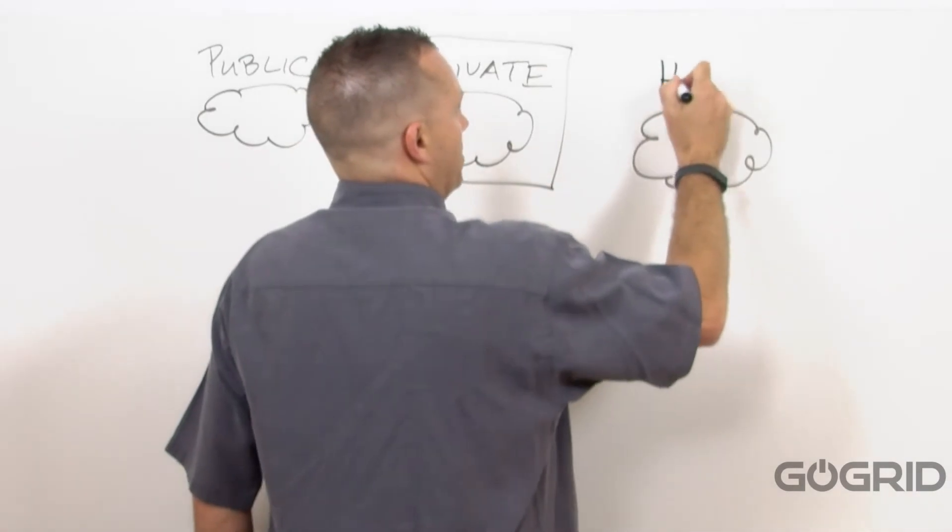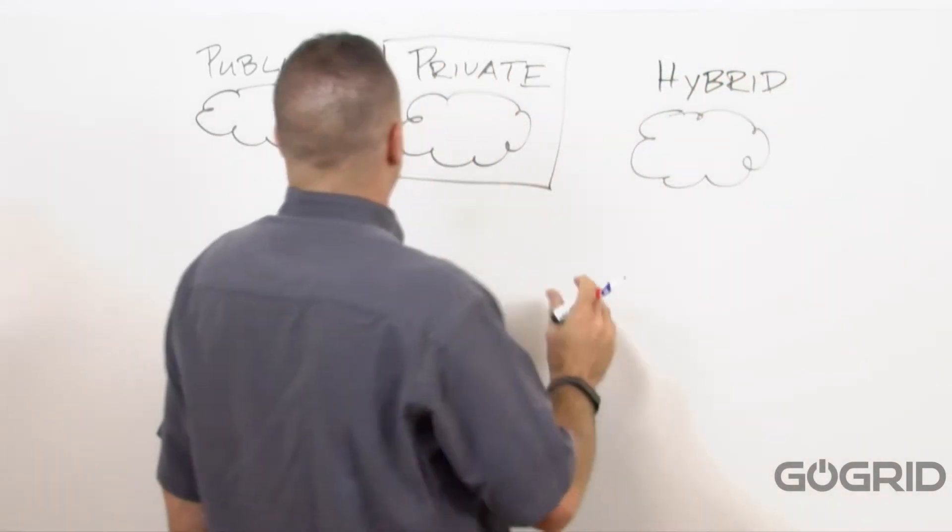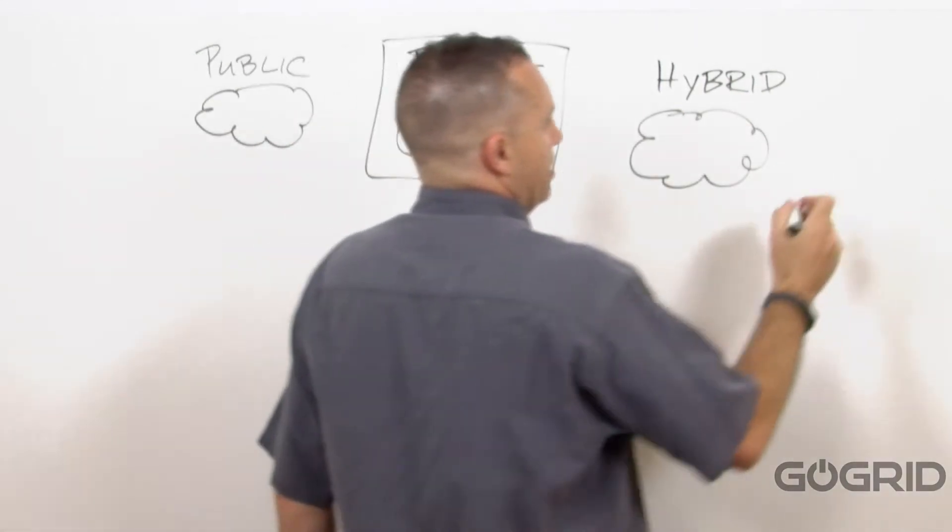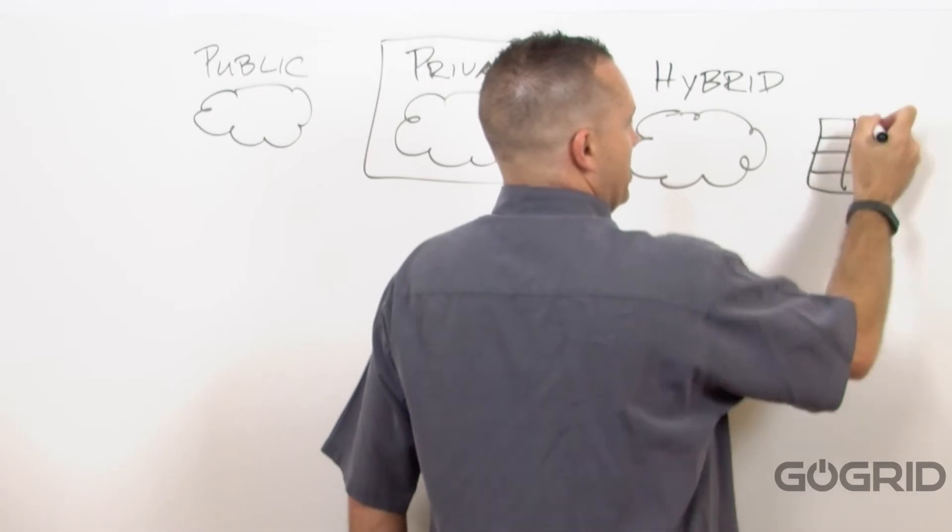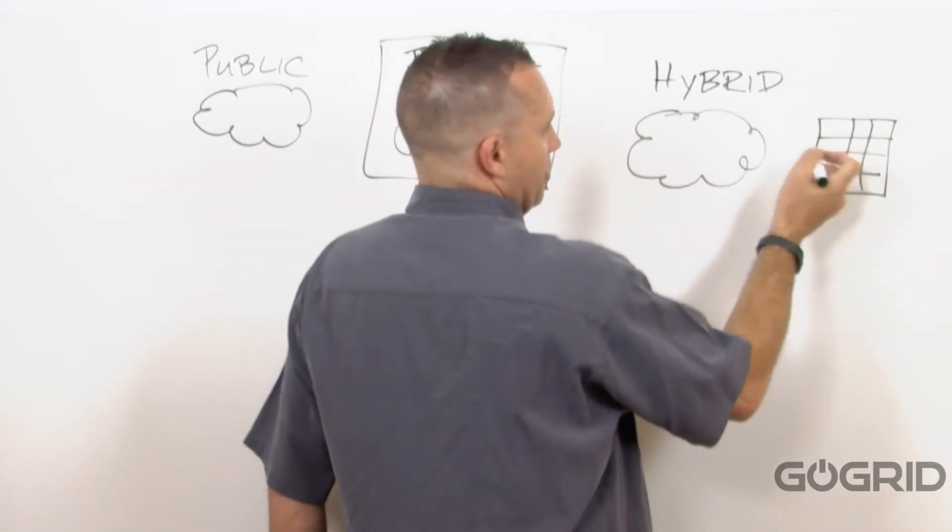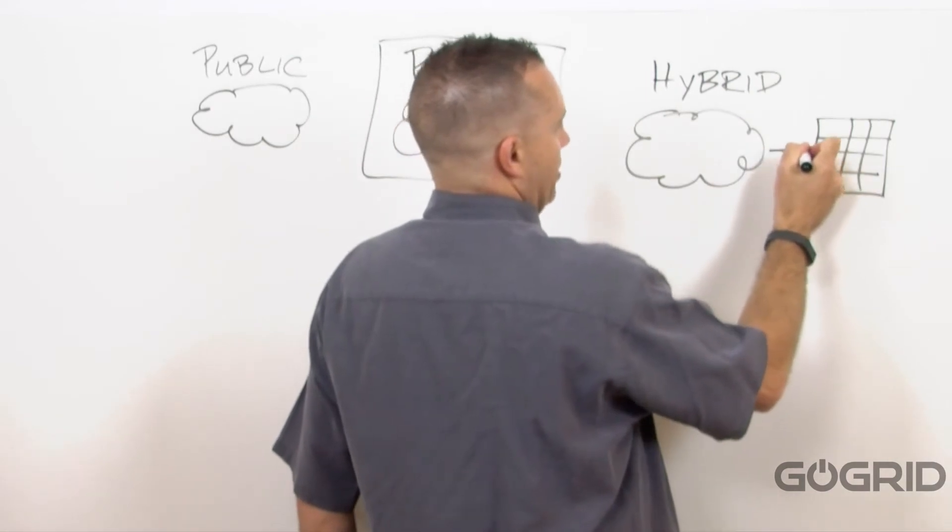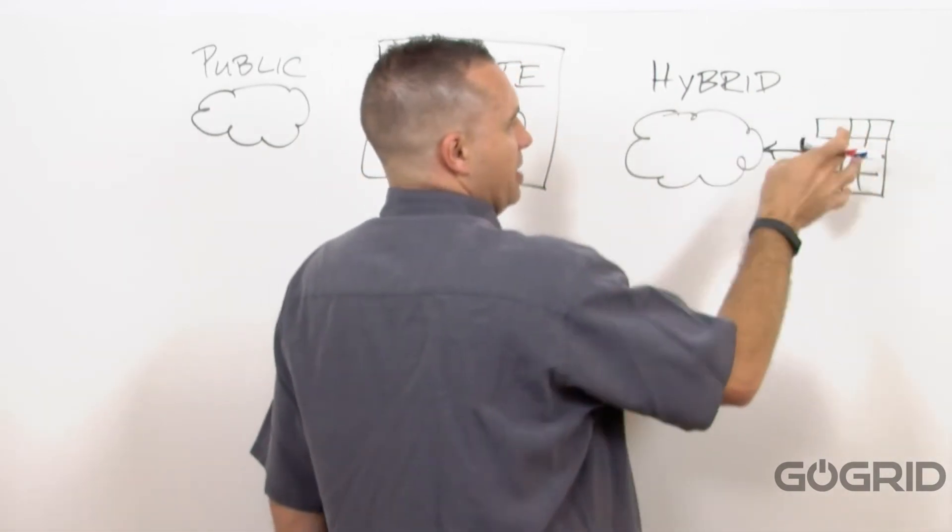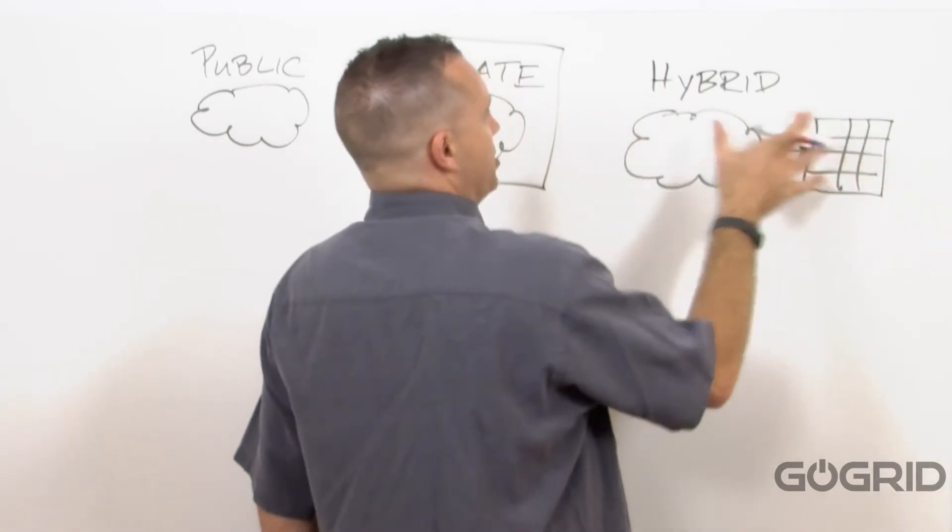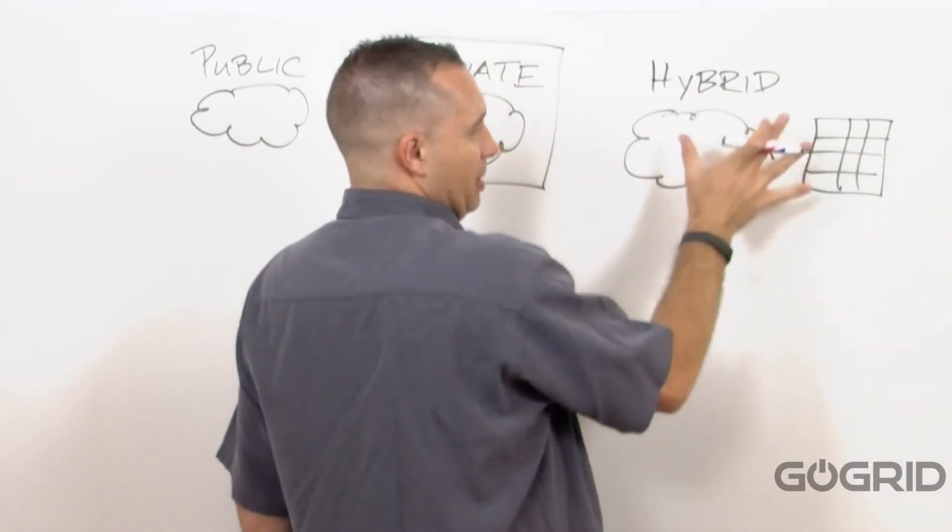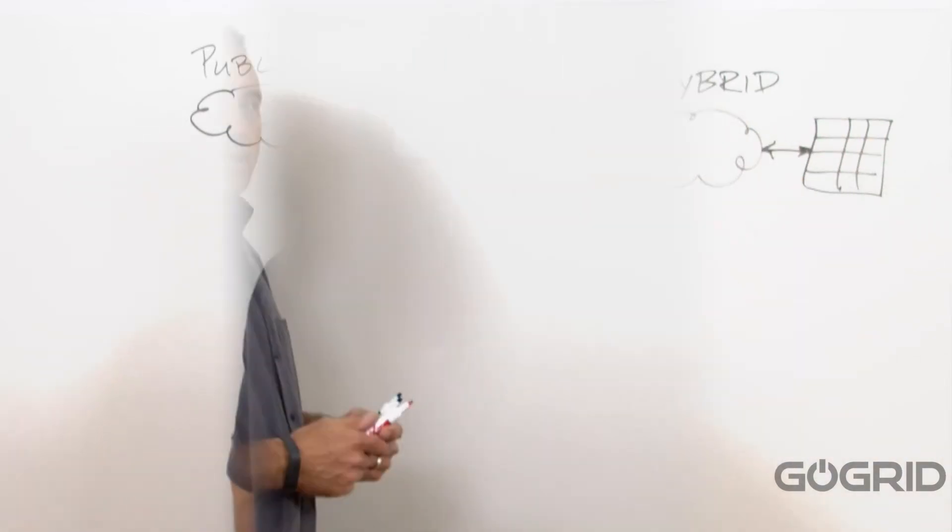And then you have something called a hybrid cloud. A hybrid cloud is essentially like a public cloud, but it is connected to a customer's data center. This could be on-premise, this could be a leased data center, similar to a private cloud. But when you need resources that you don't have within your data center, you're bursting out into a public cloud, or another cloud, and you're sharing resources that way.